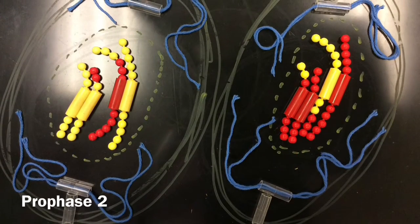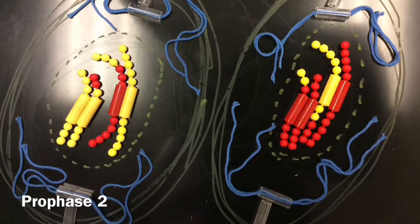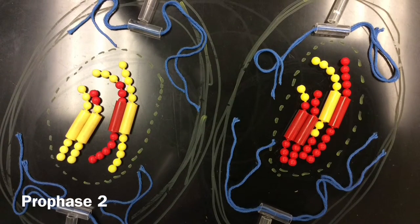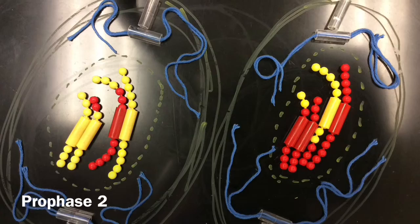In prophase II, the chromosomes reform and the two nuclei break apart. Then the centrals send out spindle fibers and connect to the centromeres of the chromosomes.